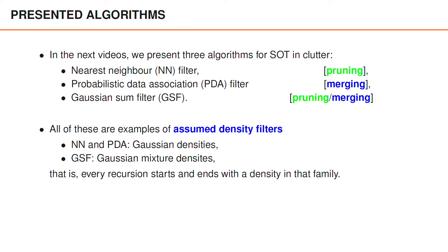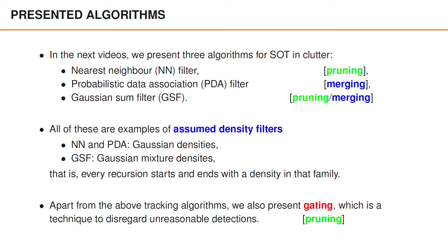Like all algorithms that we describe, these are three examples of assumed density filters. The fact that these filters are assumed density filters means that they start and end every recursion with a density from the same family of distributions. Both nearest neighbor and PDA reduce the Gaussian mixture to a single Gaussian density, whereas the Gaussian sum filter reduces it to a Gaussian mixture with a few components. Nearest neighbor and PDA therefore start every recursion with a Gaussian density, whereas the Gaussian sum filter starts every recursion with a Gaussian mixture density.